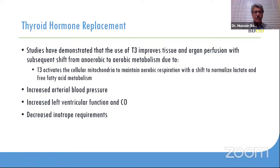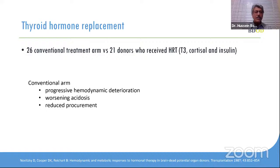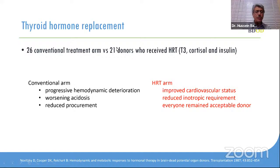One study compared 26 donors with conventional treatment — vasopressor and fluid only — against 21 donors that received hormone replacement with T3, cortisol, and insulin. Insulin was used because of hyperglycemia, and cortisol to compensate for cortisol deficiency. In the conventional arm, there was progressive hemodynamic deterioration, worsening acidosis, and less organ procurement. However, with the hormonal arm, all these parameters improved.